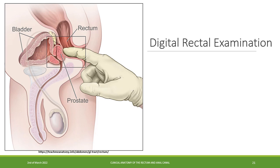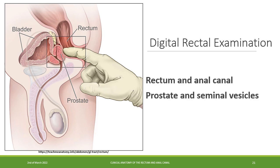Now we know the anatomical relations of the rectum. It is useful to talk about digital rectal examination, a procedure that provides access to related structures. The doctor can identify several conditions pertaining to the rectum and anal canal, prostate and seminal vesicles, urinary bladder, and perineum.